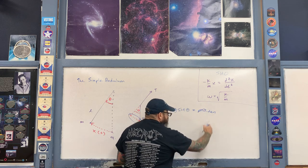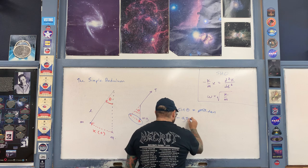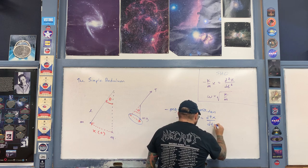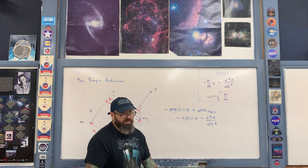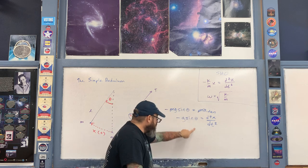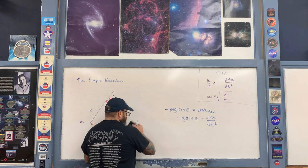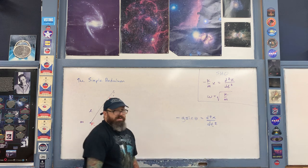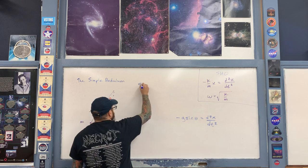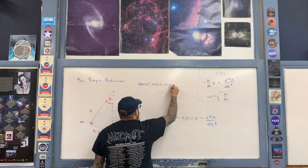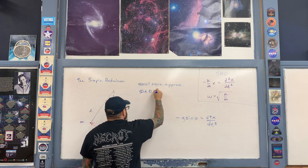We cancel out the mass m and write the tangential acceleration as the second derivative of position with respect to time. Now, does this differential equation look like the SHO differential equation? No — that equation is in terms of position, whereas this one is in terms of angle. We need a couple of extra steps. Just as we did for the conical pendulum, here for the simple pendulum we're going to use the small angle approximation.